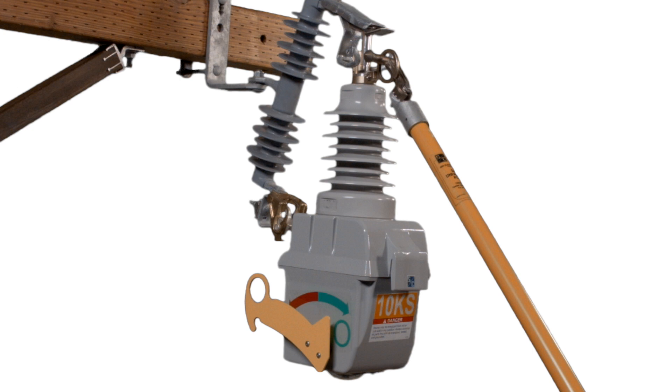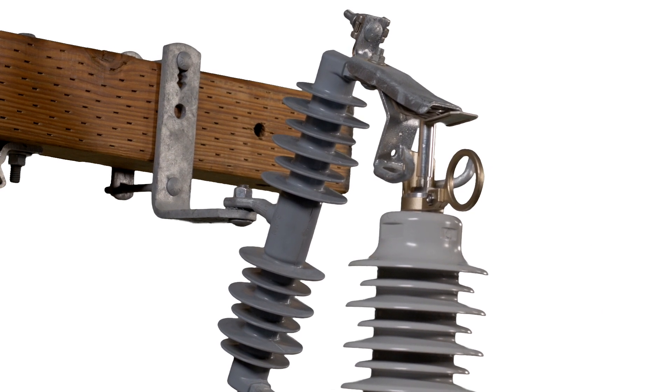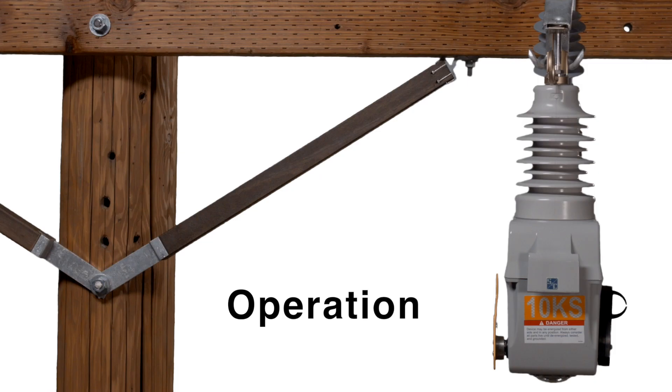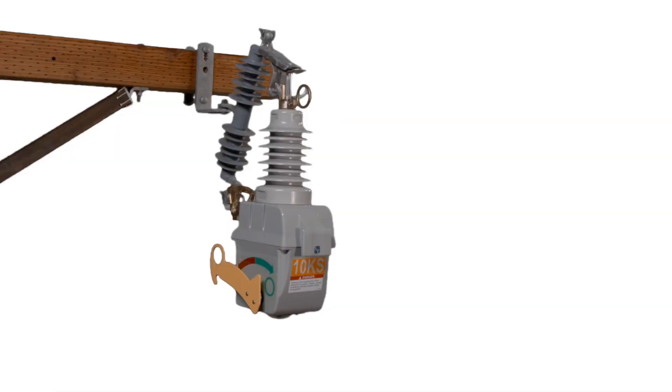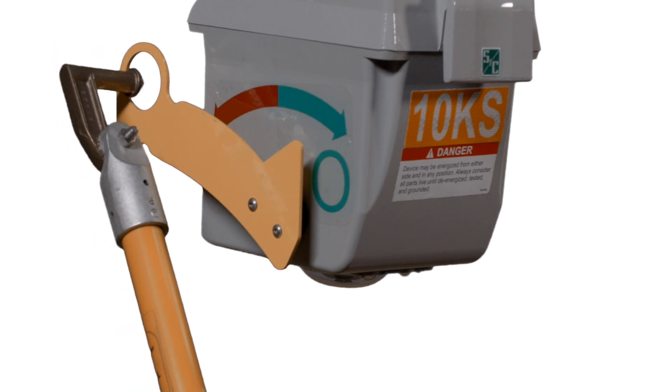Disengage the tool from the pull ring, taking care not to pull the VacuFuse Interrupter open. With the VacuFuse Interrupter closed into the mounting, energize the transformer by pulling down on the open-close lever to close the VacuFuse Interrupter.